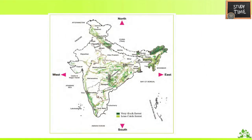Here you can see forest areas shown in green color on the map. Dark green refers to very thick forest, and light green refers to less thick forest. In Arunachal Pradesh you can see very thick forest. In Uttarakhand, Karnataka, Telangana, Orissa, Jharkhand, and West Bengal, you can also see some forest areas. Note down all these places where you can see more numbers of forests.